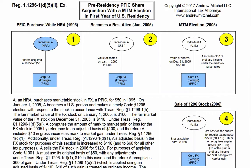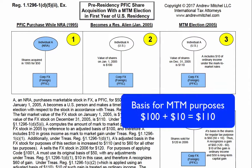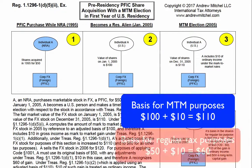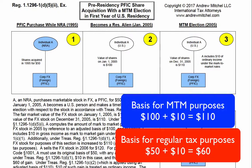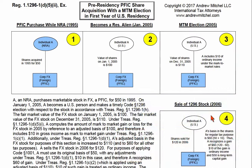Additionally, A's adjusted basis in the FX stock for mark-to-market election purposes is increased to $110. Importantly, however, for all other tax purposes, A's basis in the FX stock starts at $50 from the purchase back in 1995 and increases to $60 from the $10 mark-to-market inclusion.